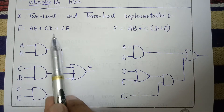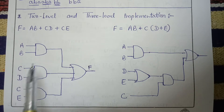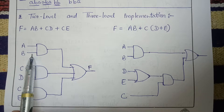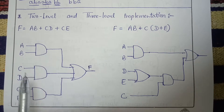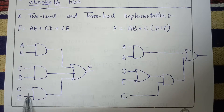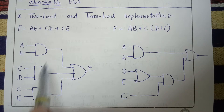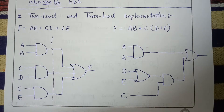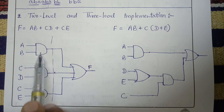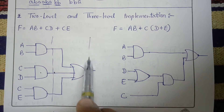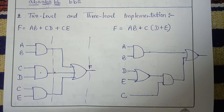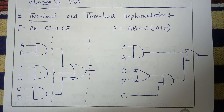If I implement this function in this way, then in the first level we AND a and b, then c and d, then c and e. In the first level we have used only AND gates to perform these three operations. In the second level we use OR operation on the three outputs of these three AND gates. That is why this implementation is called two-level implementation.